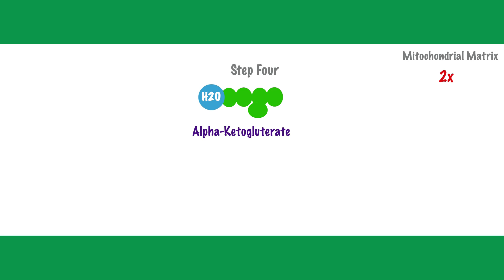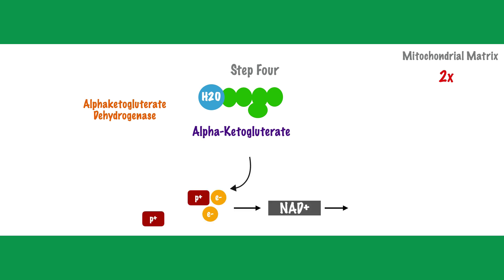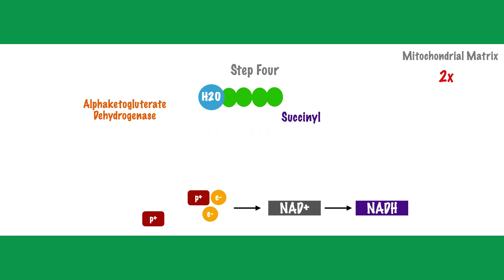In the fourth step, alpha-ketoglutarate undergoes the same series of events as the previous step. The enzyme alpha-ketoglutarate dehydrogenase acts on alpha-ketoglutarate, leading to the removal of two protons and two electrons, of which both electrons and one proton combine with NAD to form NADH, again utilized later in the electron transport system. One proton is left behind in the mitochondrial matrix. Carbon dioxide is then removed, reducing the five-carbon molecule to a four-carbon molecule called succinyl, and coenzyme A attaches to form succinyl coenzyme A.